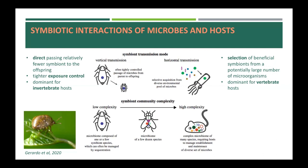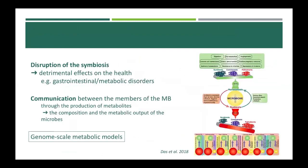In both modes of transmission, once the symbiosis is established, the host must control the symbiote population by preventing over-reproduction and over-exploitation of host resources. Whether we are talking about surface-bound, plant-associated or within-host systems, disruption of the symbiosis has detrimental effects on the health of the host organism, leading to different diseases.